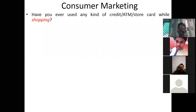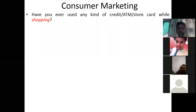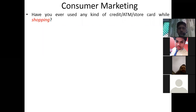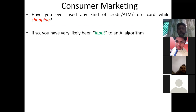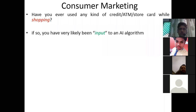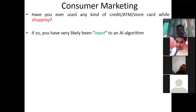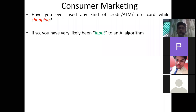Have you ever used any kind of credit card, ATM card, or store card while shopping? A store card is like the ones given in Big Bazaar — they give you a personalized store card. If you have used one, you have likely been an input to an artificial intelligence algorithm, because each and every piece of information is stored in your credit or ATM card.